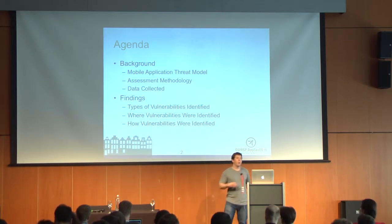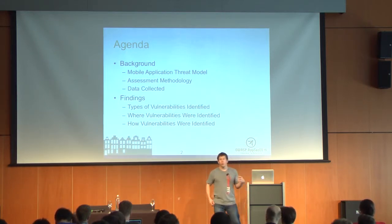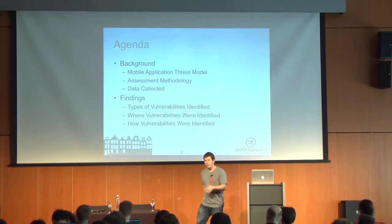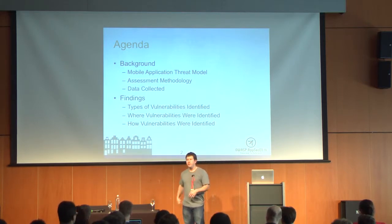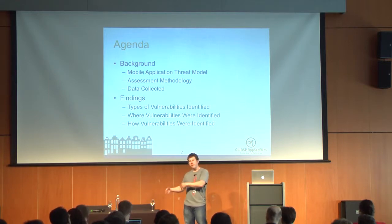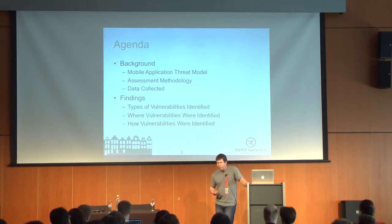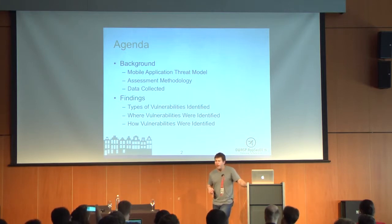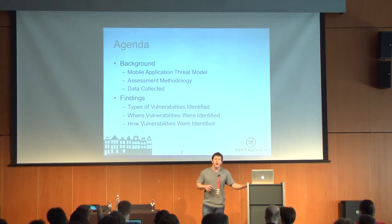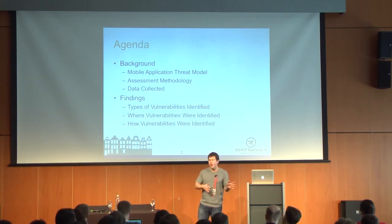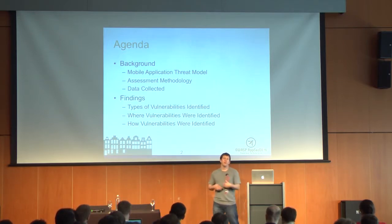Finally, we'll look at what tools and techniques were used to identify the most and most serious vulnerabilities. You've got two major classes of tools: static testing, looking at the code at rest, and dynamic testing, looking at code while it's running. You can do both with automated tools as well as manually. So we'll look at the blend of vulnerabilities that came out of automated versus manual activities, and static versus dynamic activities.